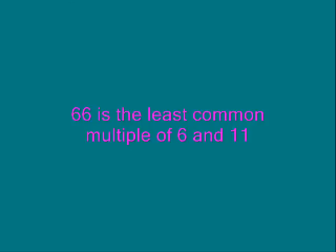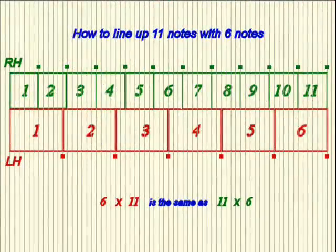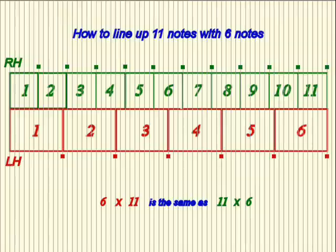What we'll do is draw a grid of 66 columns and then separate that into equal blocks of 6s and 11s, as you see in the next picture. Each green box is 6 columns wide — 11 of these make 66 columns. Each red box is 11 columns wide — 6 of these make 66 columns. Now you can see precisely how the 11 green dots fit over the 6 red dots.